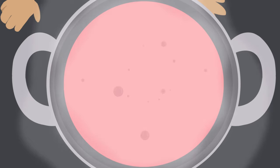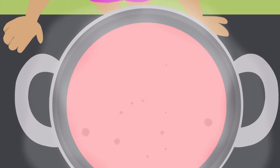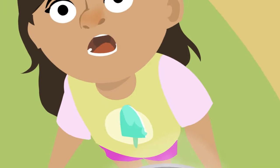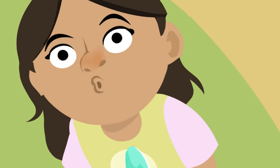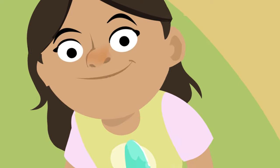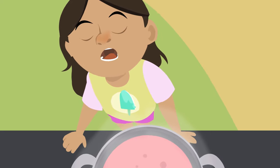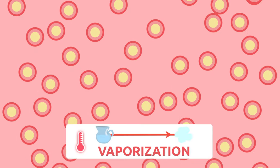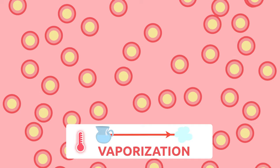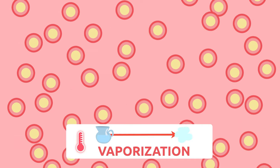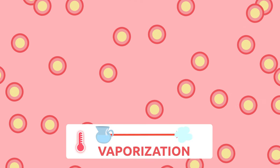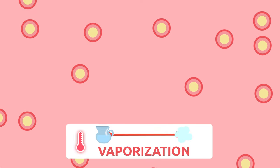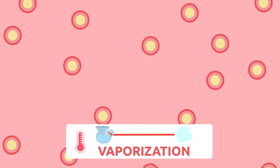Liquid turns into gas when heated. Do you remember what we call this process? It's called vaporization. When a liquid is heated, the bonds among the particles that make up matter become more loose, so particles move around freely.